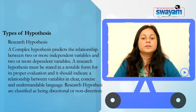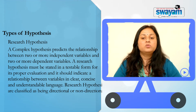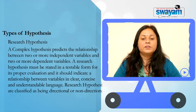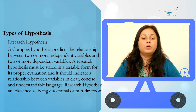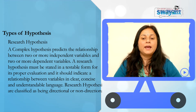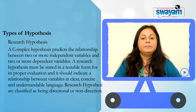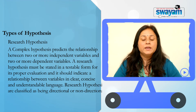Whereas the complex hypothesis predicts the relationship between two or more independent variables and two or more dependent variables. A research hypothesis must be stated in a testable form for its proper evaluation and it should indicate a relationship between variables in clear, concise and understandable language.